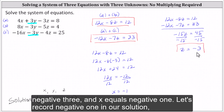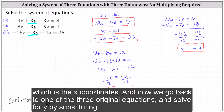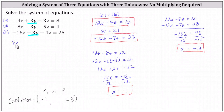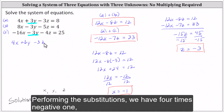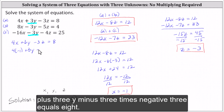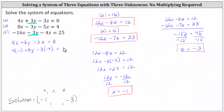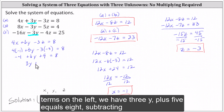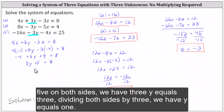Now we know z equals negative three and x equals negative one. Going back to one of the three original equations, we solve for y by substituting negative three for z and negative one for x. Using the first equation: 4 times negative one plus 3y minus 3 times negative three equals 8. Simplifying: negative four plus 3y plus 9 equals 8, so 3y plus 5 equals 8, giving 3y equals 3, and therefore y equals one.